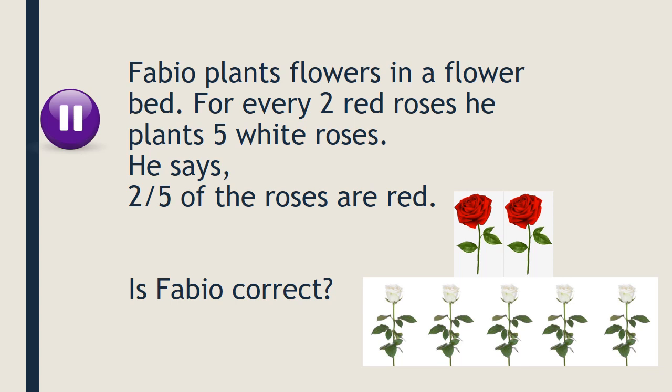With fractions, the denominator represents the whole and the numerator represents how much we're referring to. Ratio is when we're making a comparison — looking at the relationship between two things. For every two red roses he plants five white roses; that describes the relationship. When you put the ratio numbers together you'll often find the total. So Fabio is wrong — two out of seven roses are red, meaning two sevenths are red.